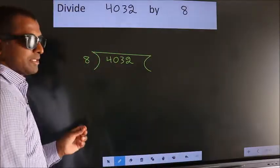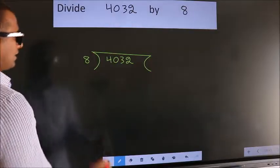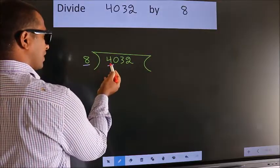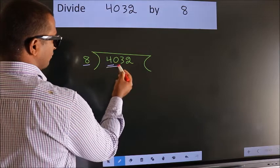This is your step 1. Next, here we have 4, here 8. 4 is smaller than 8, so we should take two numbers, 40.